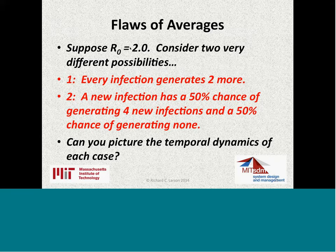In option two, the newly infected person has a 50% chance of generating four new infections and a 50% chance of generating none. It turns out under option two there may be no pandemic — the whole thing could die off in one generation. Or I could generate four infections, and a pandemic might really start, with something totally out of control. The temporal dynamics are quite different. The same average, but the distribution is different.